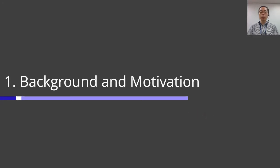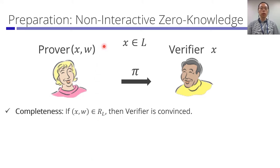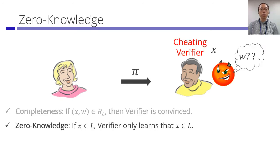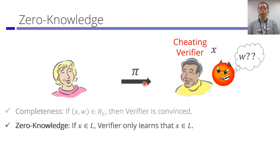Let me first provide the background and motivation. In this talk, we'll be considering non-interactive zero-knowledge NIZKs. In an NIZK, there's a statement X in language L, and any prover that holds a valid witness W for statement X shall be able to construct a proof pi. This proof pi will convince the verifier that the prover knew witness W. The first security property is zero-knowledge: for a cheating verifier, given proof pi, it leaks no information about witness W — the only thing the verifier learns is whether statement X is in the language.